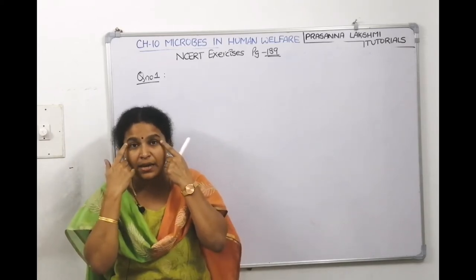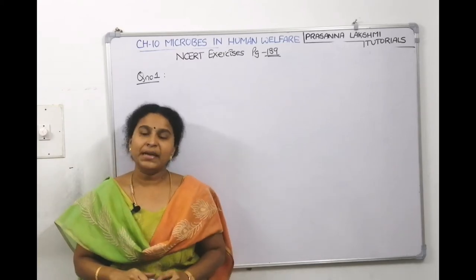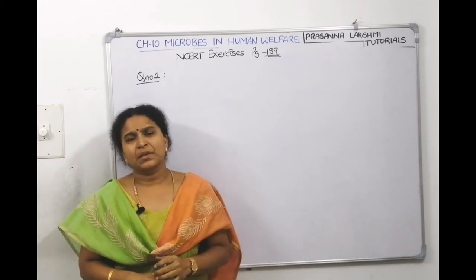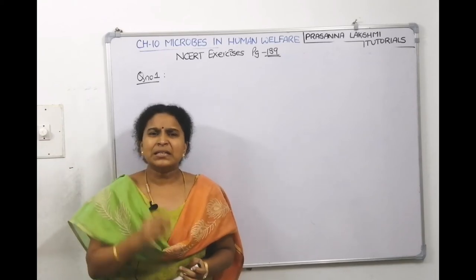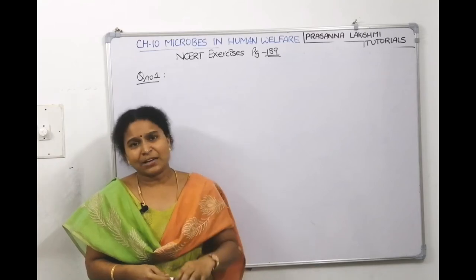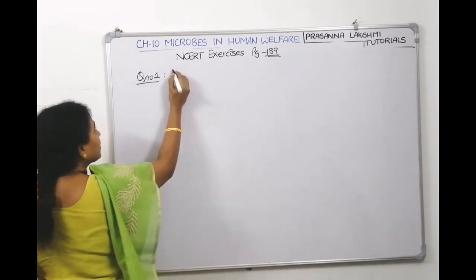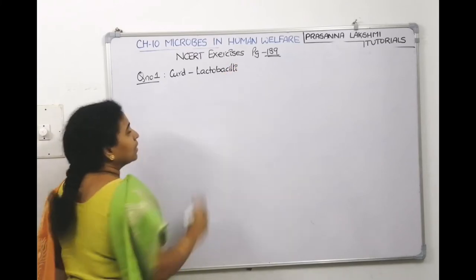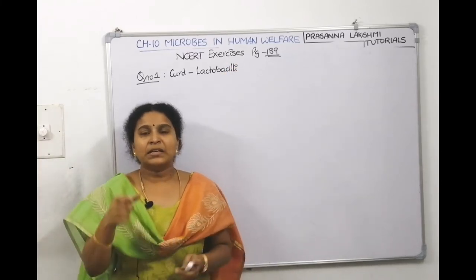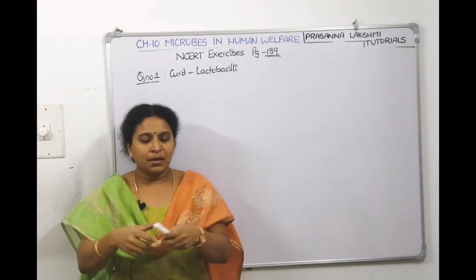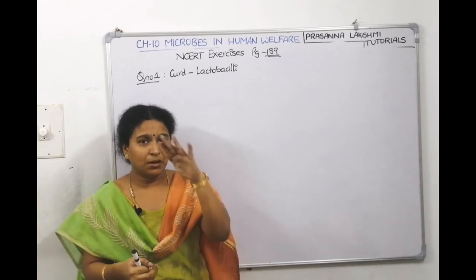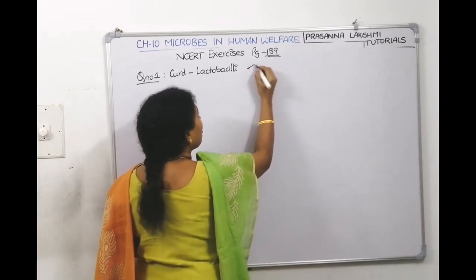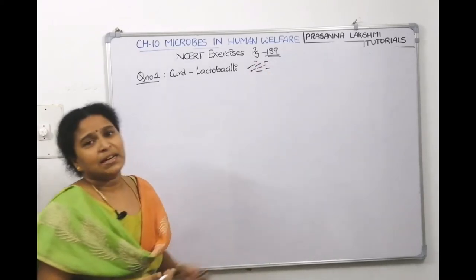NCERT Exercise Question 1: Bacteria are microorganisms — we cannot see them with the naked eye. To observe bacteria under a microscope, the best sample is curd or buttermilk, which contains Lactobacilli. Take curd, dilute it with water, place a drop on a glass slide, heat-fix it on a burner, stain it, wash it, and observe under a microscope — you will see nice rod-shaped bacteria.